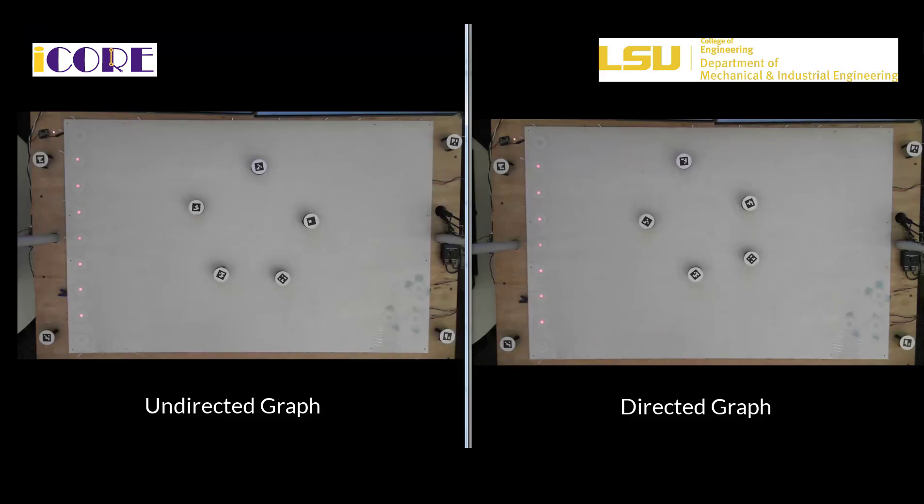As you might have noted, the left side, which is an undirected rigid graph, the rate of convergence is much faster than the directed one.